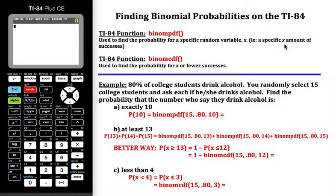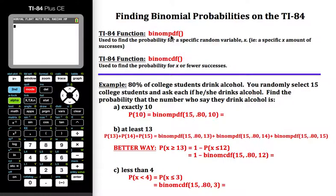So it's a specific x amount of successes. We will use the CDF version when we want to find the probability for x or fewer successes. Once you get those two things distinguished — the difference between the two of them — you will easily know which function you're going to need to use.